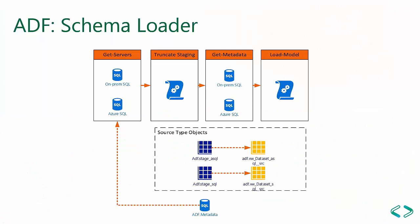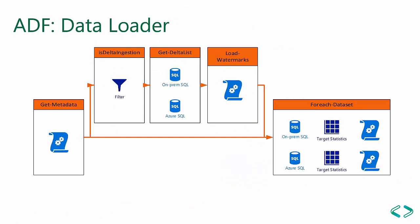Getting into the pipeline designs: this is the schema loader. That first activity gets a list of connections to retrieve schemas from. We truncate all staging tables, then do a ForEach where we copy data from each system type. The final activity runs a stored procedure to load the model. Here's the data loader pipeline — you can see two different paths that data can take. The 'get metadata' activity runs that stored procedure I showed in SQL Server, with dataset information separated by source system type.